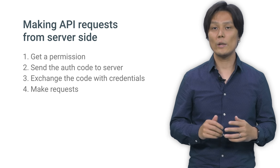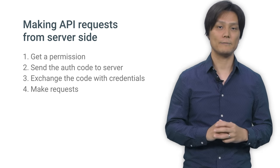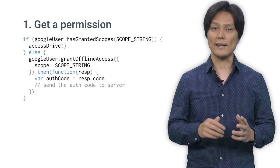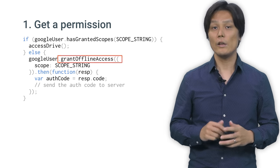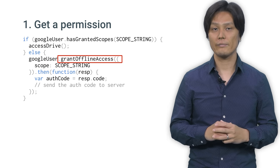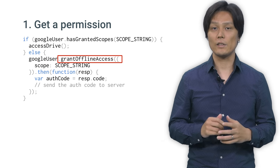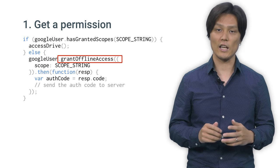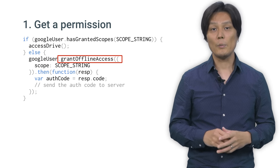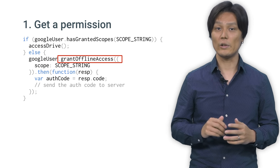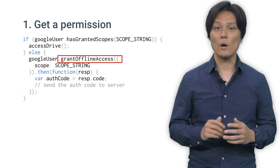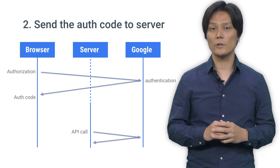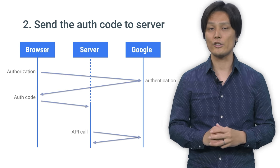Let's see how we do the exact same thing on the server side. Getting the user's permission happens on the client side. Use grant offline access to get a permission. Offline means that you can access Google APIs even when the user is not using your application. Upon the user's consent, your client will receive an object that contains an auth code. You can then send the auth code over to the server using a secure HTTPS connection.